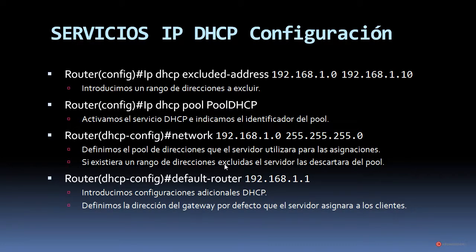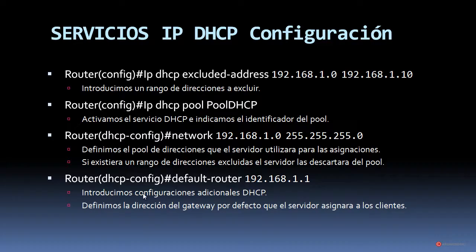Si existiera un rango de direcciones excluidas, el servidor las descartaría del pool, que es lo que hemos hecho anteriormente, así que empezaría a asignar desde la dirección 11 hacia arriba. Y finalmente tenemos el comando default-router y la dirección del gateway por defecto. Con esto introducimos configuraciones adicionales de DHCP y definimos la dirección del gateway por defecto que el servidor asignará a los clientes.